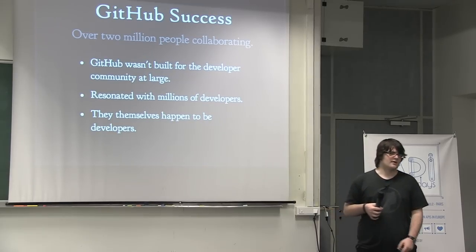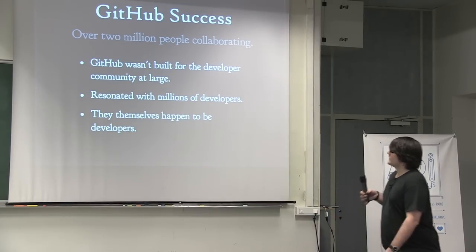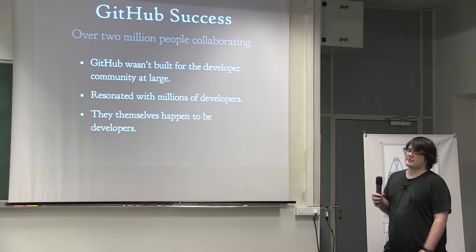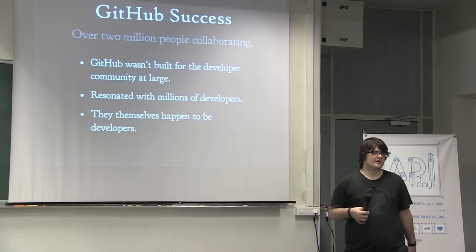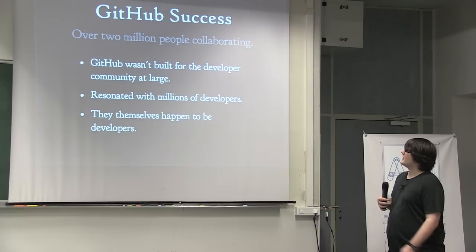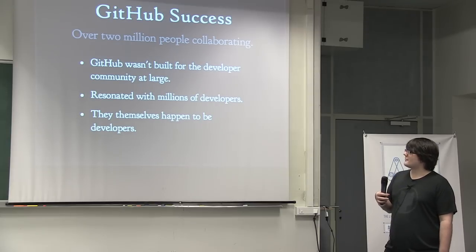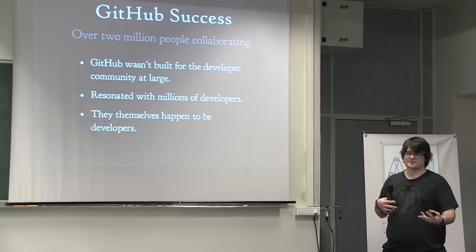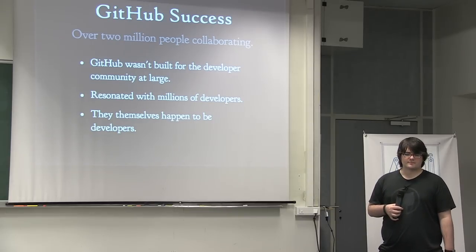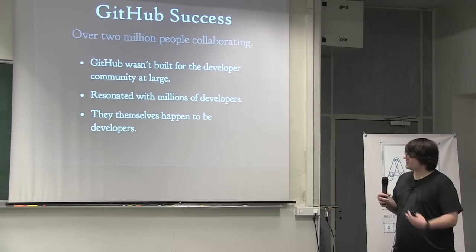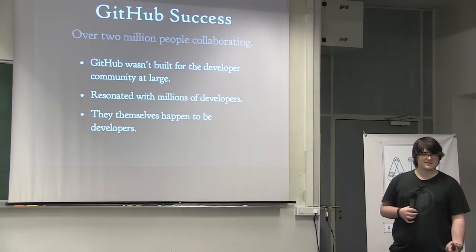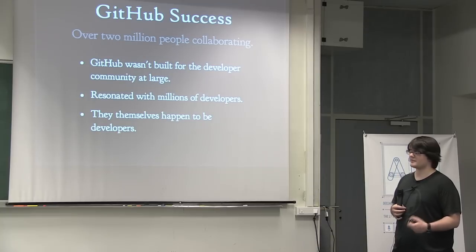GitHub is another example of a company started around this ideal. Over two million people collaborate on GitHub every day, which is incredible. It wasn't built for the largest developer community — they didn't sit down and think, how can we market to all developers? What happened was they just built it for themselves. GitHub is a source control website where people can collaborate with open source or private code using Git, a great distributed source control system where everyone has everything at all times. They built it for themselves and it resonated with millions of people, and it's been really successful because they solved it firsthand.